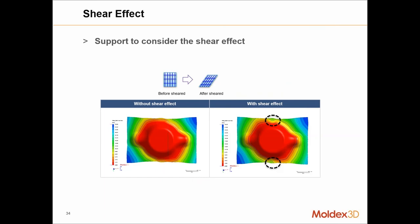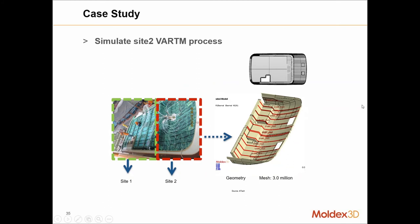MoldX3D simulation supports shear effects on the mat itself. We can see the difference in results when taking shear into account versus not taking shear into account. For a quick case study, a very large vacuum-assisted resin transfer molding part is shown — we are focused mainly on site 2 in red. For this particular geometry we had about 3 million mesh elements, and we ran two different scenarios with different numbers of injection points for the resin to flow through.